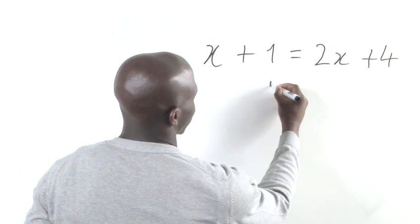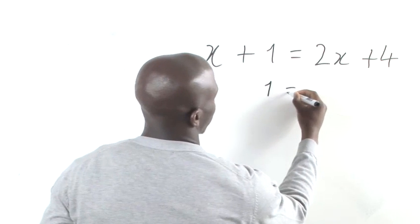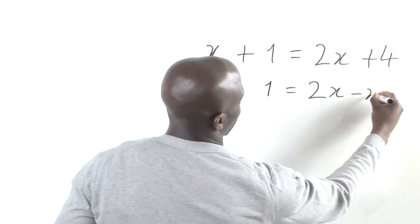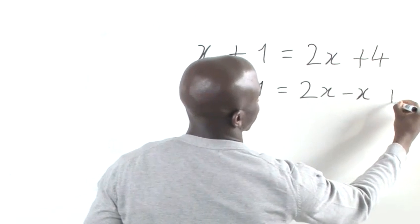So our equation should look like this now: 1 equals 2x minus x plus 4.